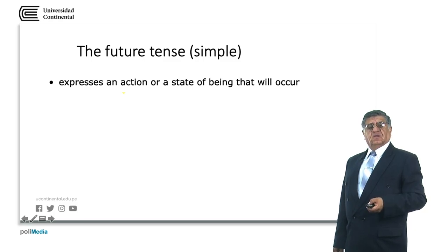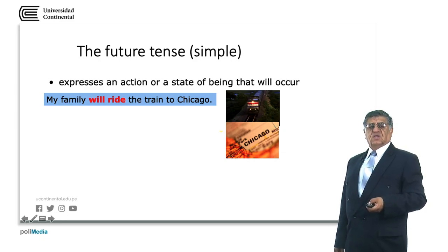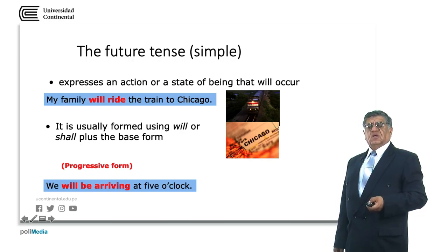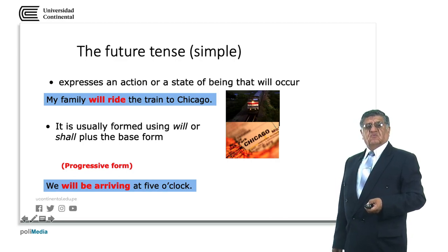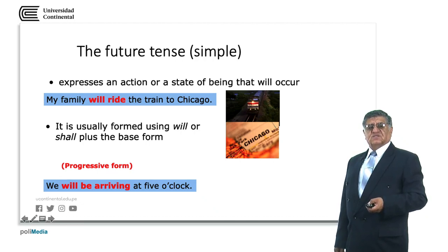In the future, we have will as a regular auxiliary. For example: my family will ride a train to Chicago — will is the auxiliary, ride is the infinitive form of the verb. We can also use shall for the first person singular and plural. The progressive form indicates an action happening at a particular time in the future: we will be arriving at five o'clock. Will be arriving is the verb phrase — be arriving gives the continuous form.